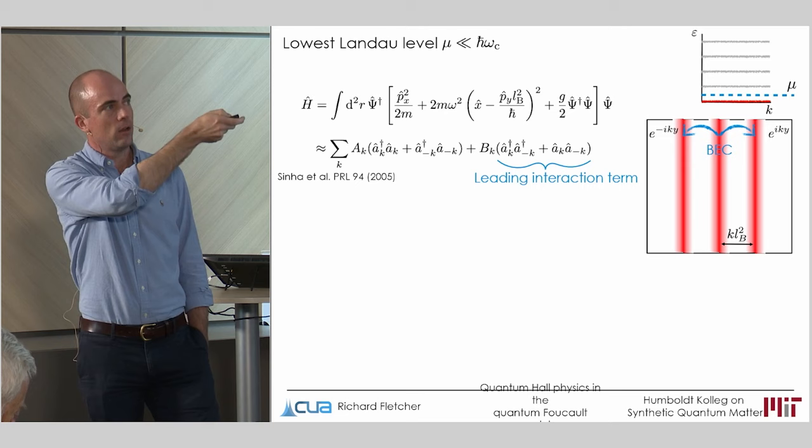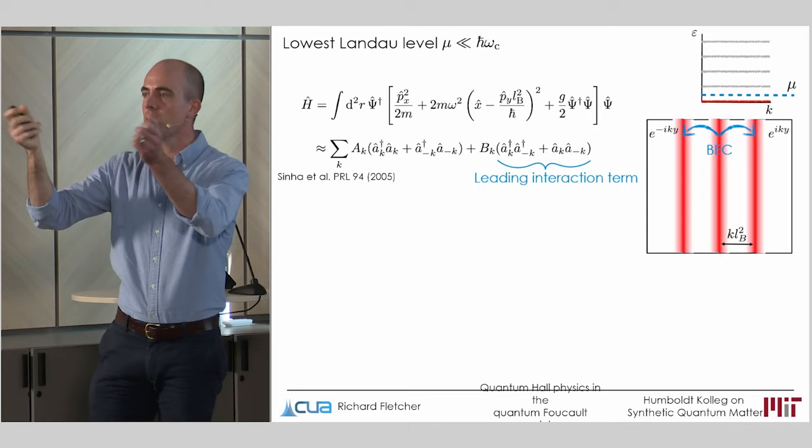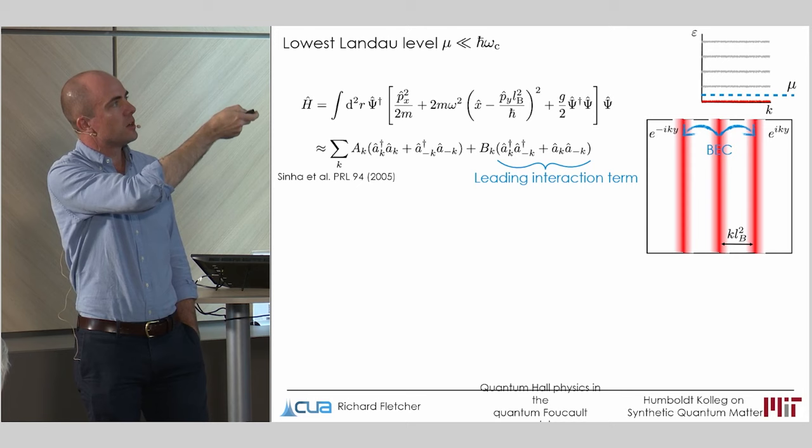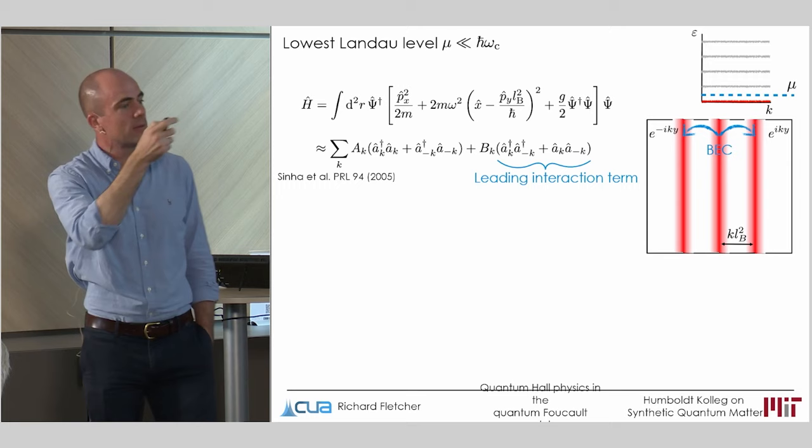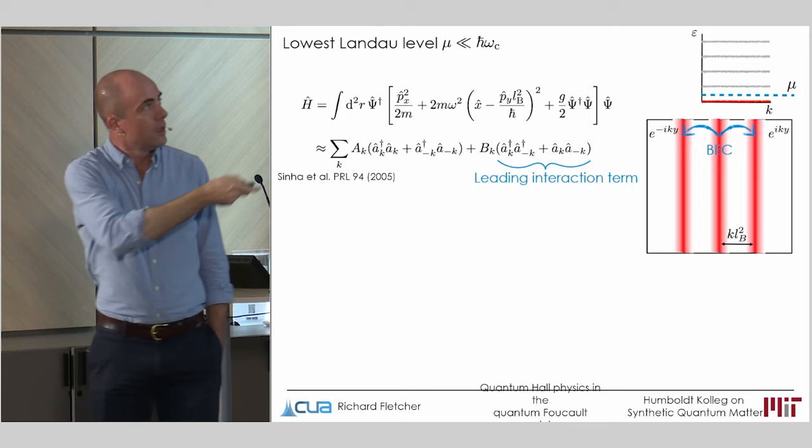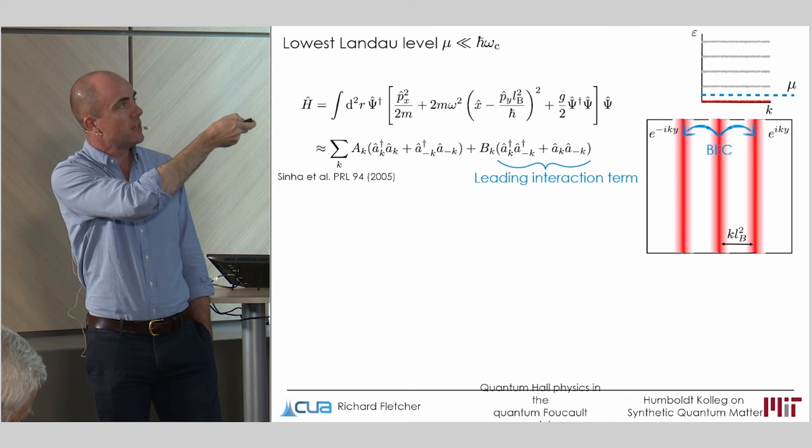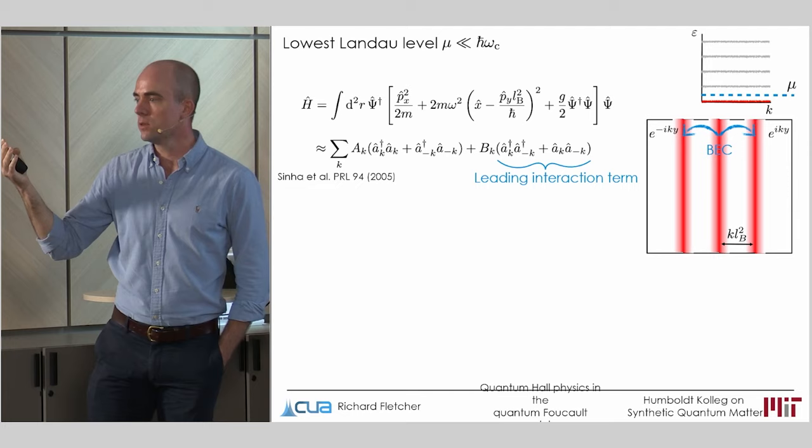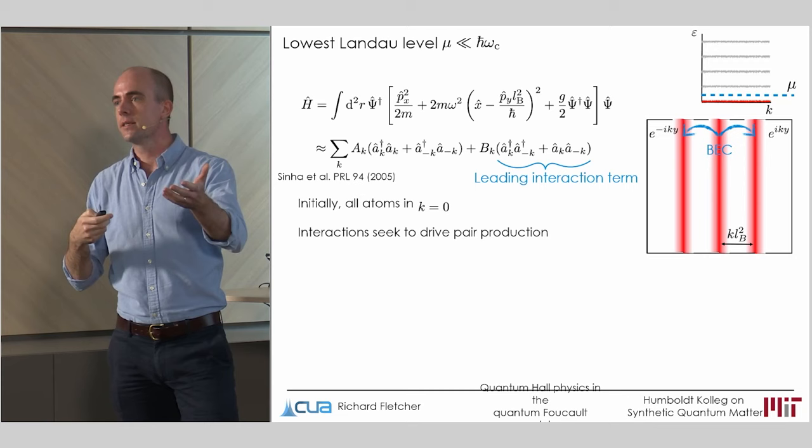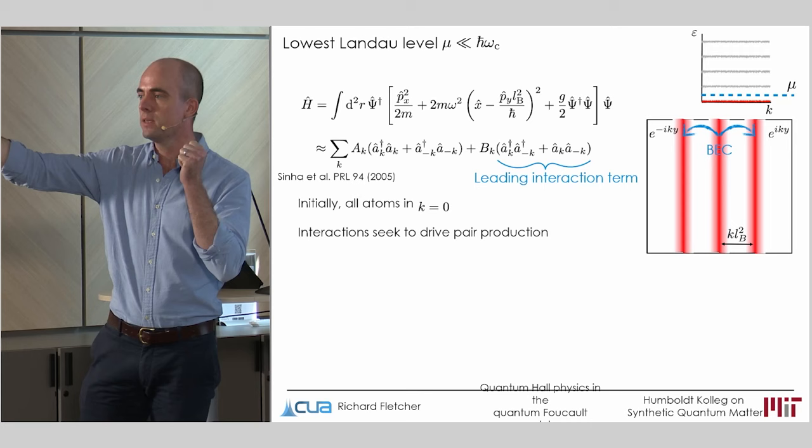And physically, what this corresponds to is pair production, that the interactions are trying to scatter two atoms from the condensate into plus or minus k. And so in something like liquid helium or in an interacting BEC in an inertial frame, the point is that these energy cost type terms are always stronger than pair production. And so this pair production part of the Hamiltonian, it gives rise to fluctuations, it gives rise to some non-zero steady state population of higher k states and what you might call quantum depletion, but nothing runs away in time. What's happening in this case is that these pair production terms are stronger than these energy cost terms, which then leads to an exponential growth of the number of particles in plus or minus k and a dynamical instability. And so one very qualitative way to see why this might be very different to an inertial frame is that because you're in a magnetic field, there is now a coupling between position and momentum. So by scattering two atoms into different momentum states, you also reduce their spatial overlap with the condensate, which softens the energy cost required to do this.